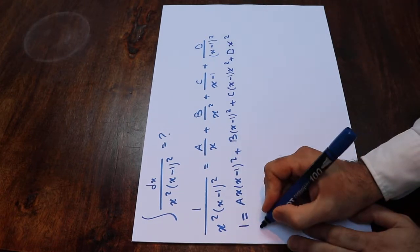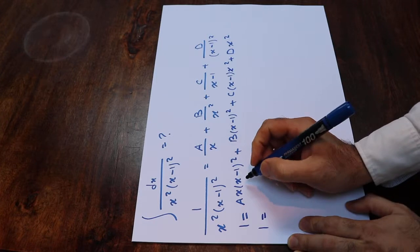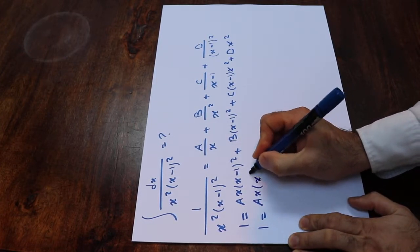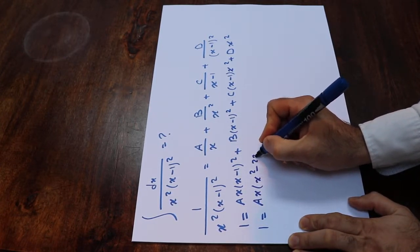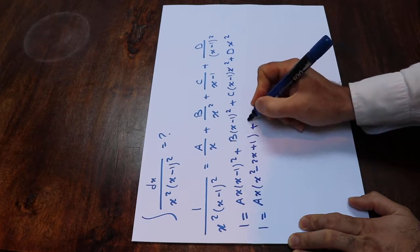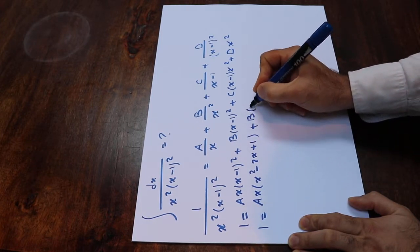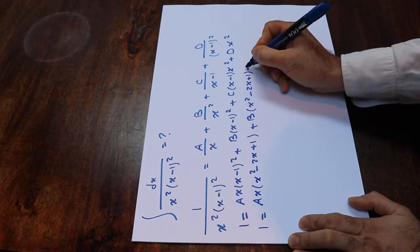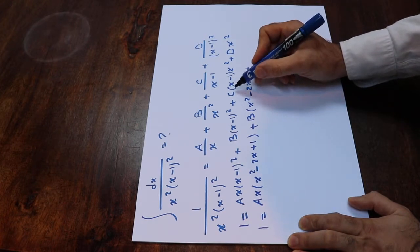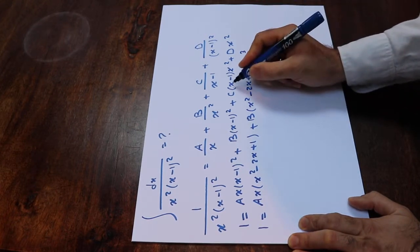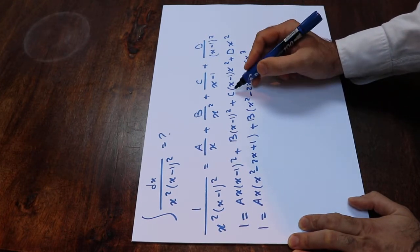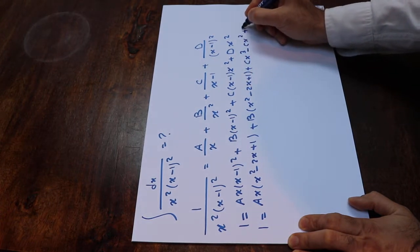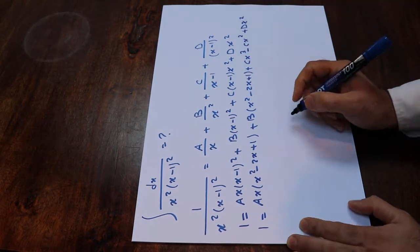So now you can expand: 1 equals Ax times (x² minus 2x plus 1) plus B times (x² minus 2x plus 1) plus Cx³ minus Cx² plus Dx².